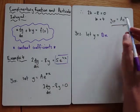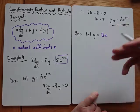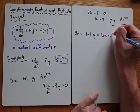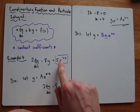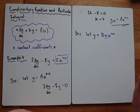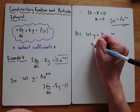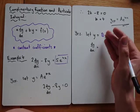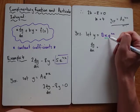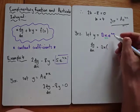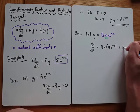When the complementary function is already contained within the right hand side, for the particular integral you have to multiply by x. So instead of B e to the 4x, we use Bx e to the 4x. Highlight this in your notes — remember to multiply by x for your particular integral when the right hand side matches the complementary function. Now, because we've multiplied by x, we have two functions of x multiplied together, so we must use the product rule. Using the product rule: u = Bx, v = e to the 4x, giving dy/dx = 4Bx e to the 4x plus B e to the 4x.